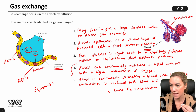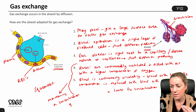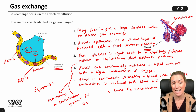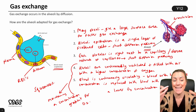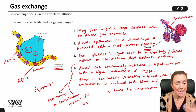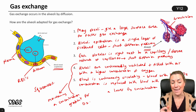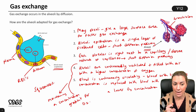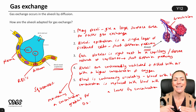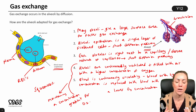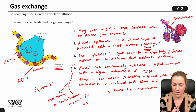Both continuous ventilation and continuous circulation of blood help maintain a concentration gradient for oxygen, so oxygen will keep diffusing from the alveolus into the blood. The same applies to CO2: there's always a higher concentration of CO2 in the blood in the capillary and a lower concentration in the alveolus, so CO2 continuously diffuses from the blood into the alveolus down its concentration gradient.